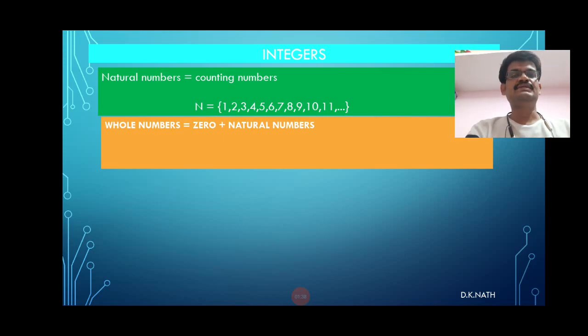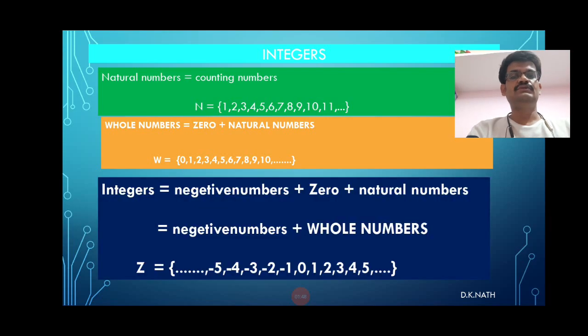Whole numbers are nothing but 0 plus natural numbers, denoted by W: 0, 1, 2, 3, 4, 5, 6, 7, 8, 9, 10 and so on.